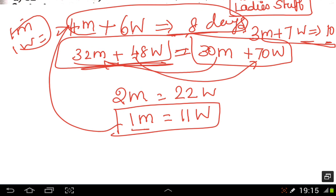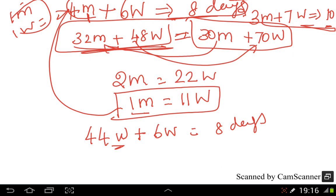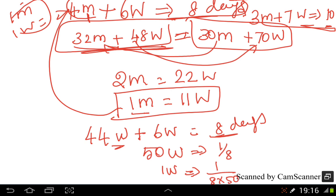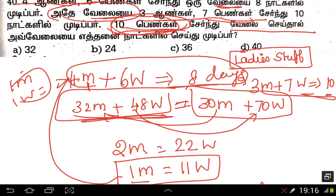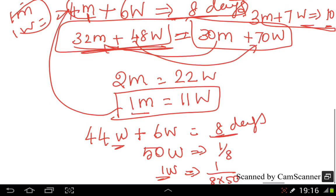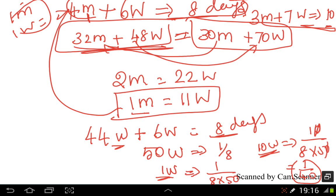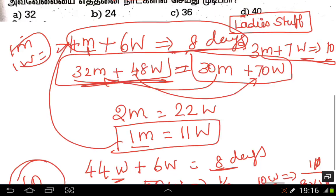Let's apply this to the first set. That is 4 men; 1 man is equal to 11 women, so 4 men is equal to 44 women. Now if you add 6 women, you get 50 women, which equals 8 days work. So 1 woman is equal to 1 divided by 8 into 50. Then 10 divided by 8 into 50, cancelling to 1 by 40. We convert it: the answer is 40 days.